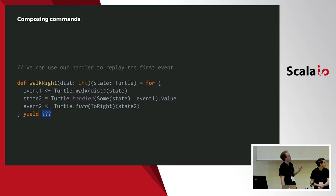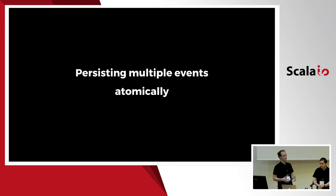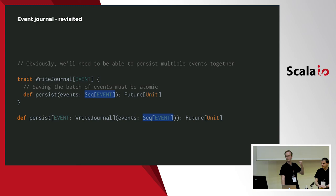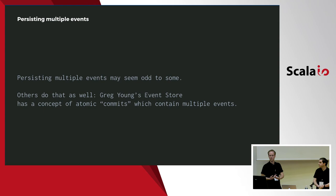The only thing we can reasonably return from this function is a sequence of events. For this to work we need to persist multiple events atomically. All we have to do is modify the signature of our journal so it accepts a sequence of events, and any implementation must be able to persist those events atomically. We are not the only ones to come to this conclusion — the event store originally created by Greg Young also had the concept of an atomic commit which can contain multiple events. This can be implemented with SQL, MongoDB, Kafka, etc. — we just need to consider the boundaries of atomic operations.